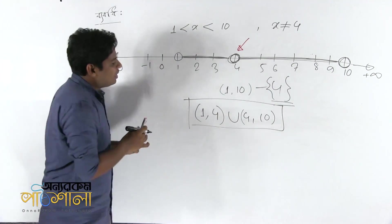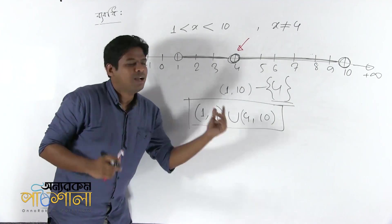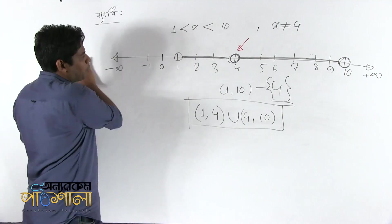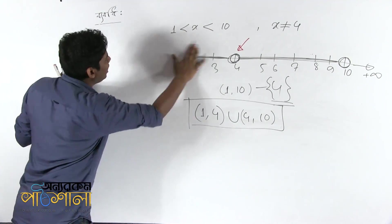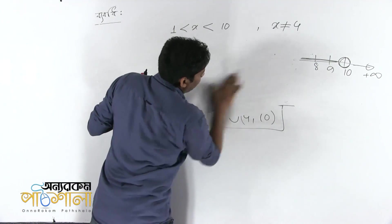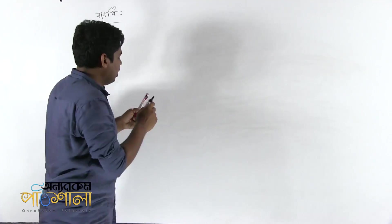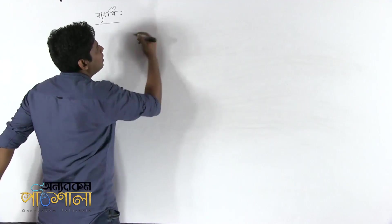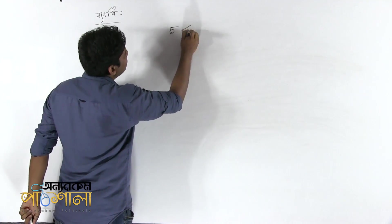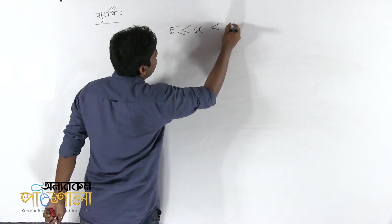I will give you the presentation. In this presentation, there are only 4 included. Now we have to solve the problem of our character type. If we have to solve the problem, we will solve the problem. What is this? I will give you the answer. 5 is less than or equal to x is less than 10.